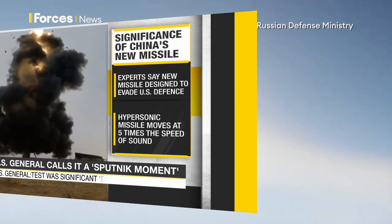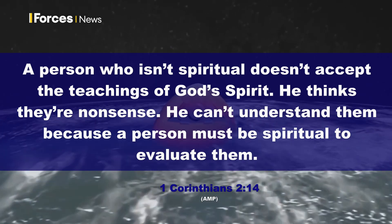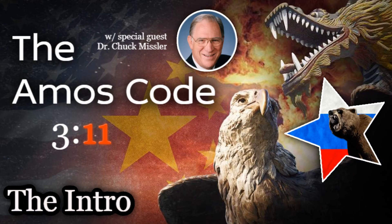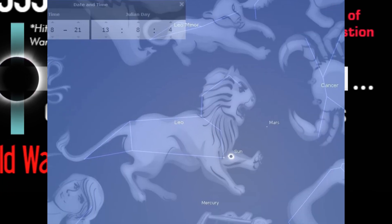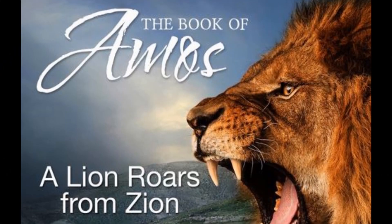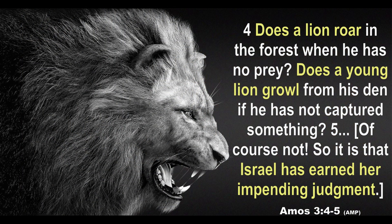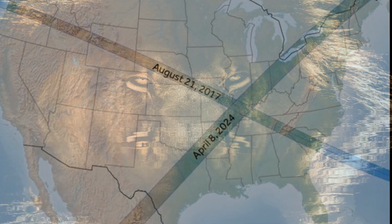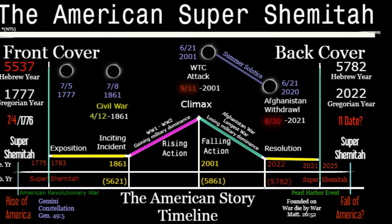I think things aren't real to people until they hit them in the face, and unfortunately that's most Americans. Coming back to one last detail with these eclipses: the eclipse on 8/21 — our 11-day connection, tied to World Wars — occurred in the constellation of Leo, which is emblematic of Jesus's judgment. In Amos, God's judgment is characterized as a lion, providing further confirmation that this X pattern of eclipses represents the fall and demise of America — the final cover of the American Super Shemitah story.